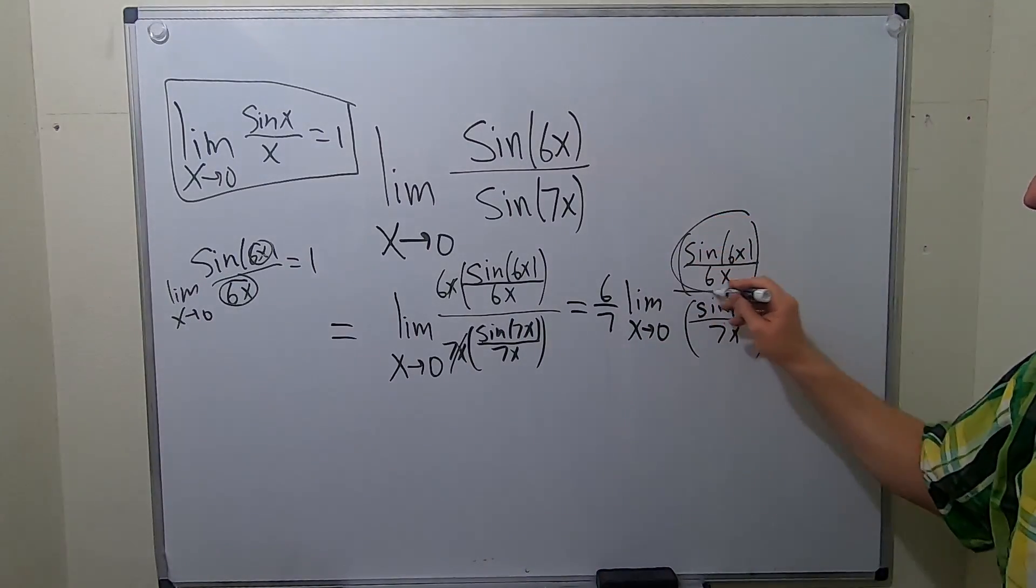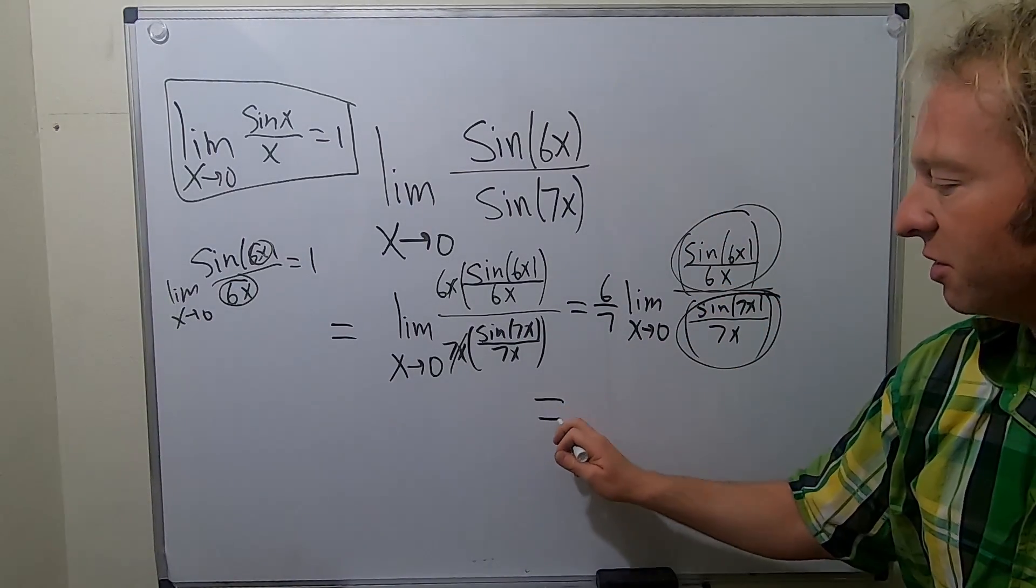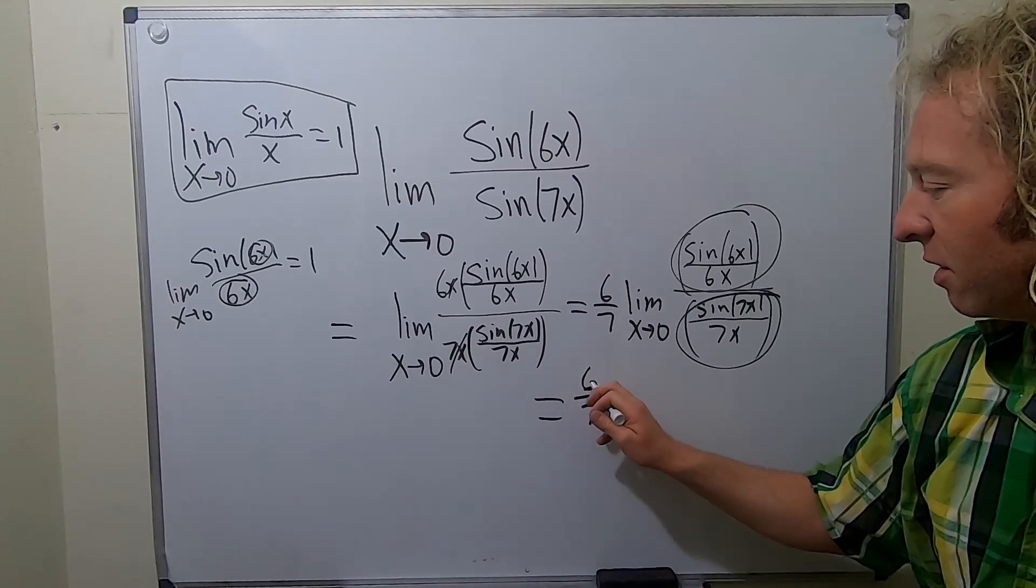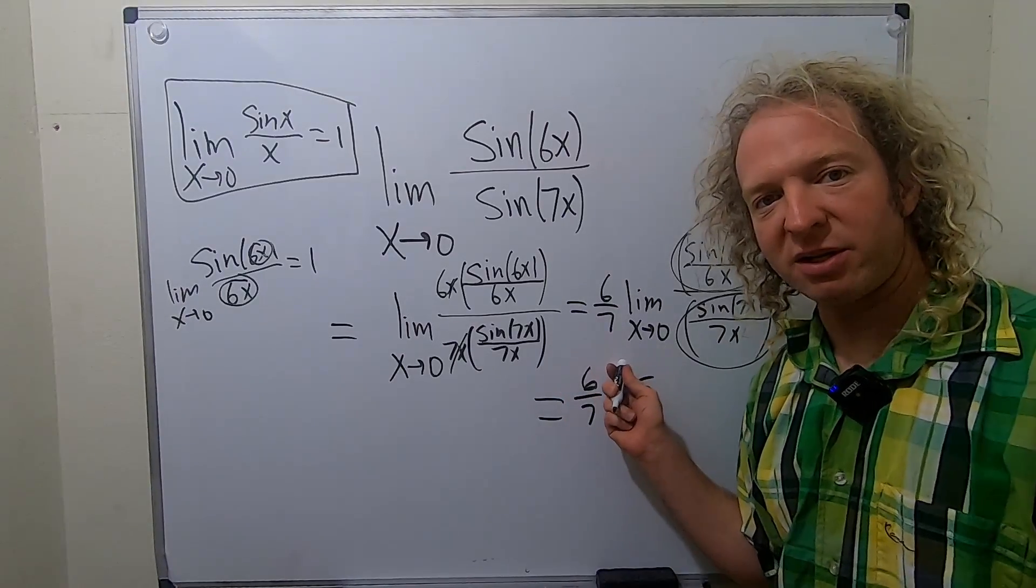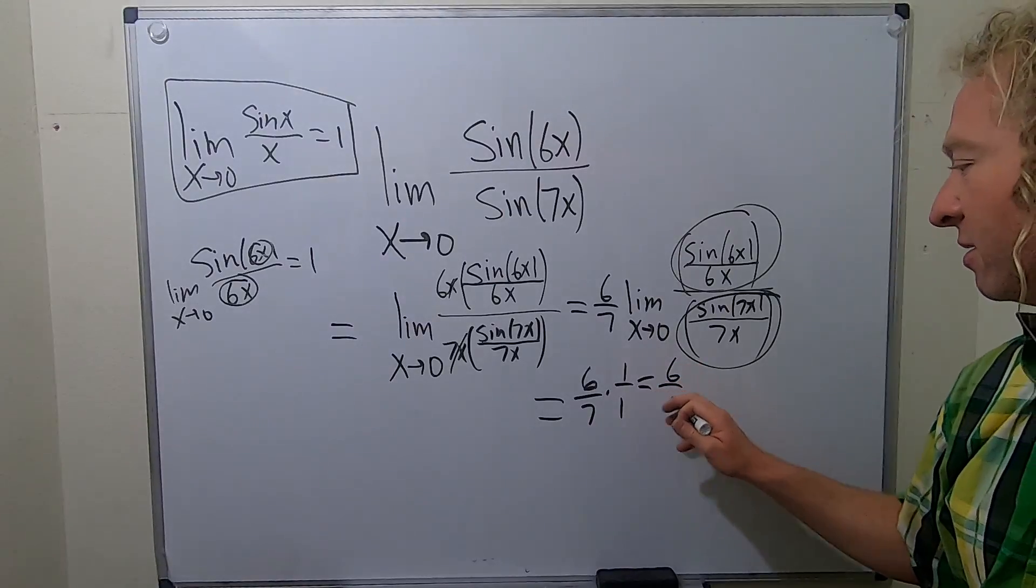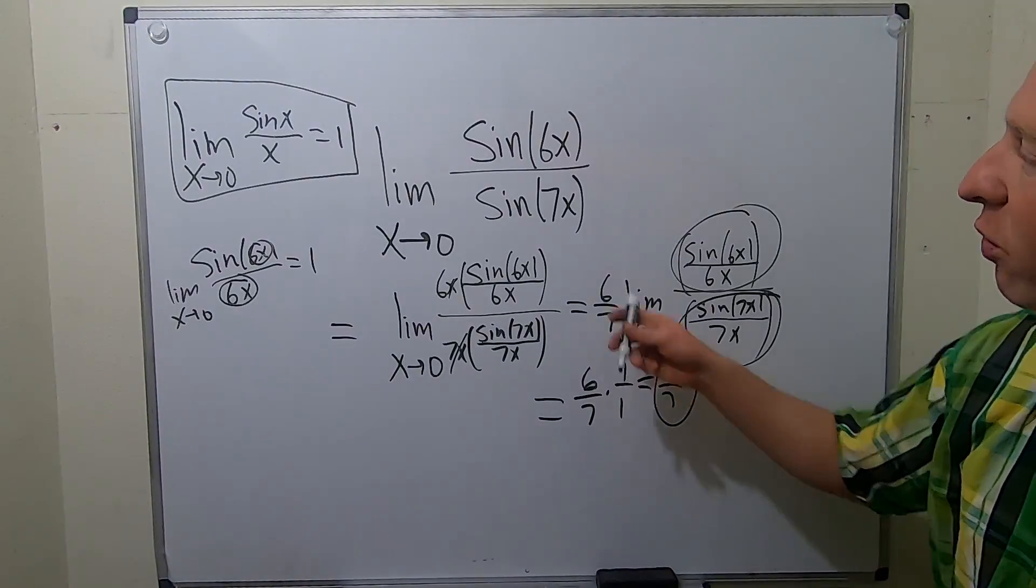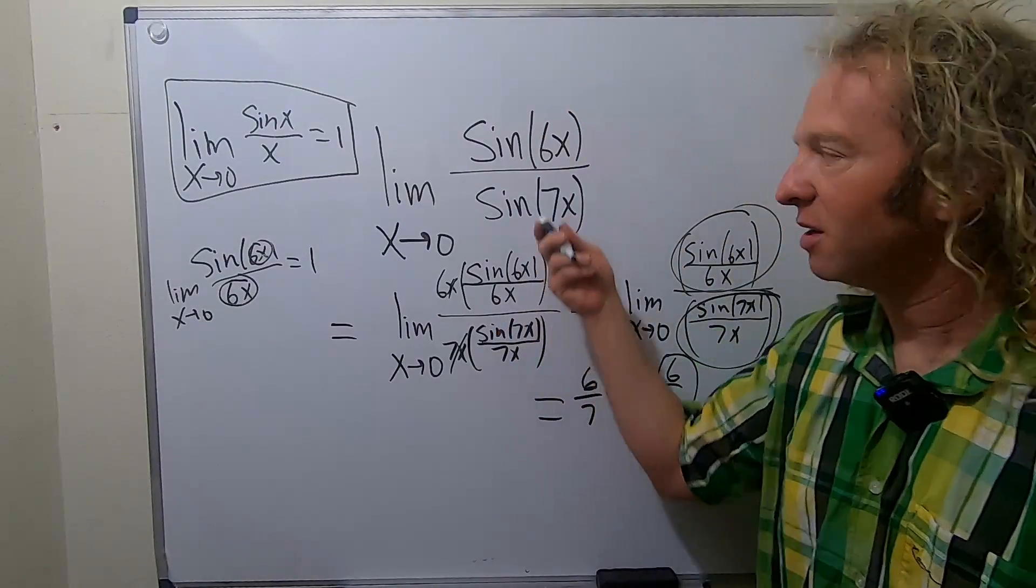We know that this limit is going to be 1. This limit is going to be 1. So this is equal to 6 sevenths times 1 over 1. 6 times 1 is going to be 6, 7 times 1 is 7. So you can see the answer is 6 sevenths, 6 over 7.